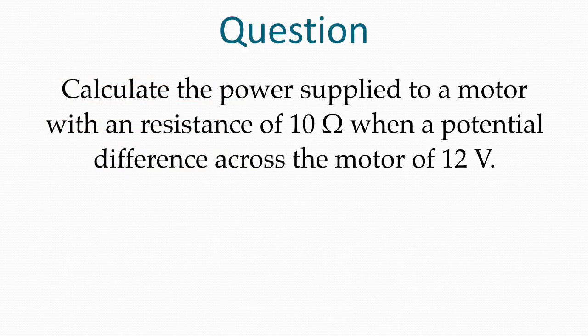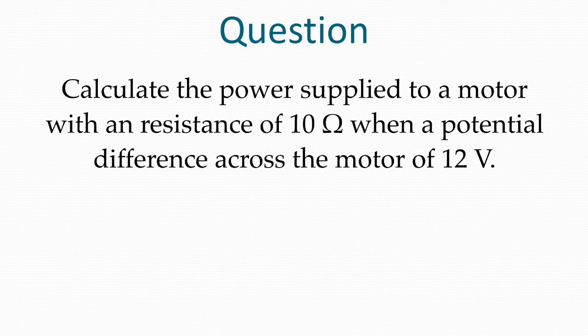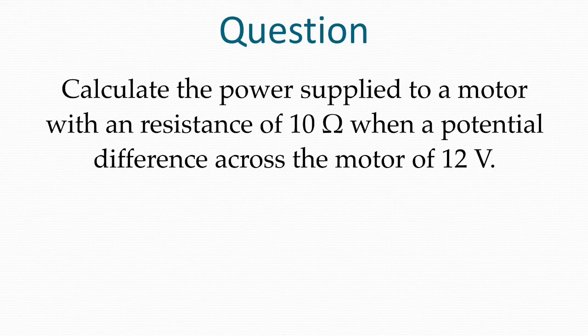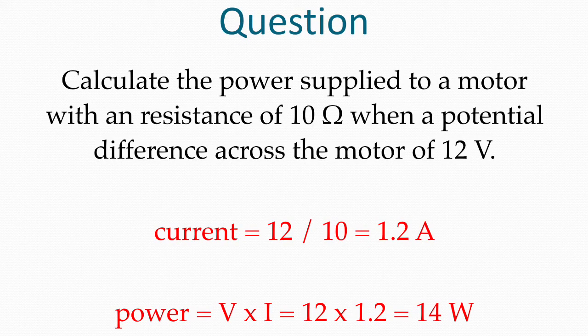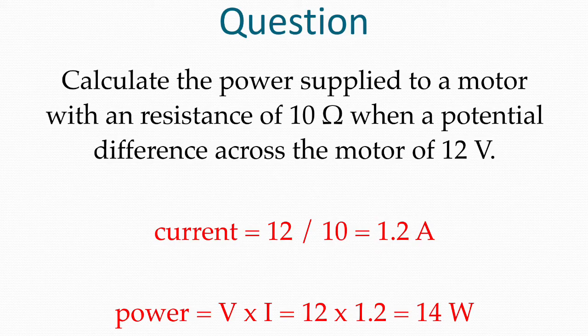Calculate the power supplied to a motor with a resistance of 10 ohms when the potential difference across the motor is 12 volts. Pause the video while you answer the question in your book. Our first step is to find the current by dividing the voltage by the resistance, getting 1.2 amps, and then to find the power we times the 1.2 amps by the 12 volts to get 14 watts of power.